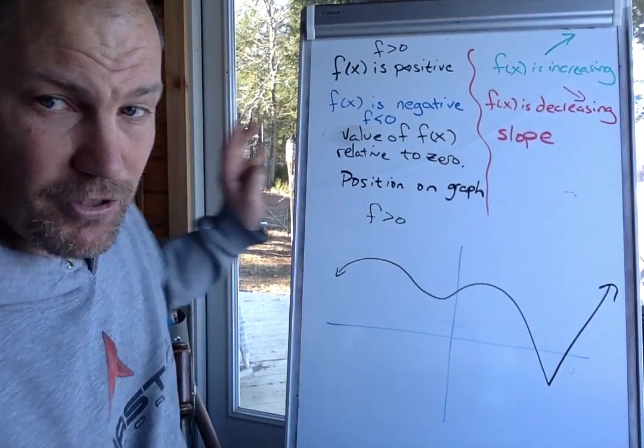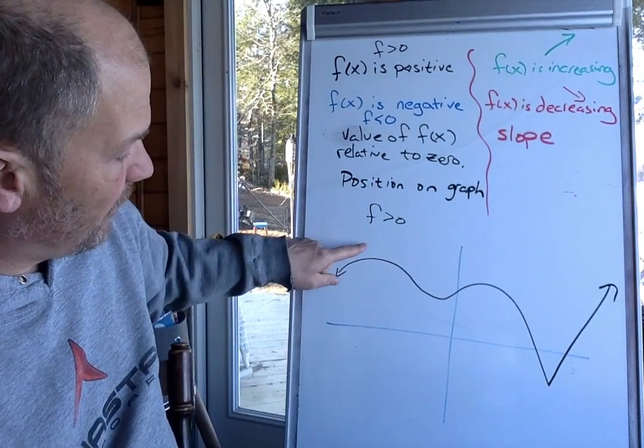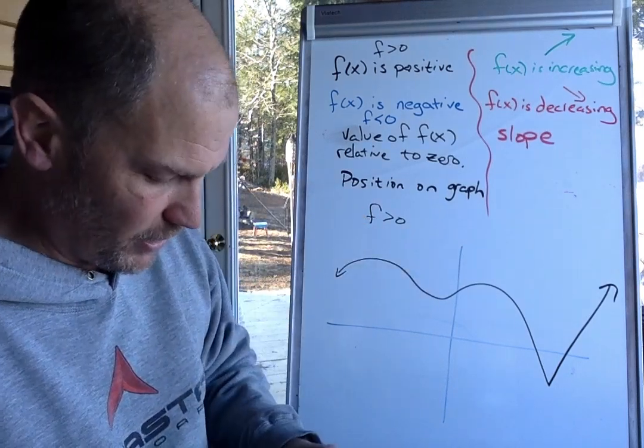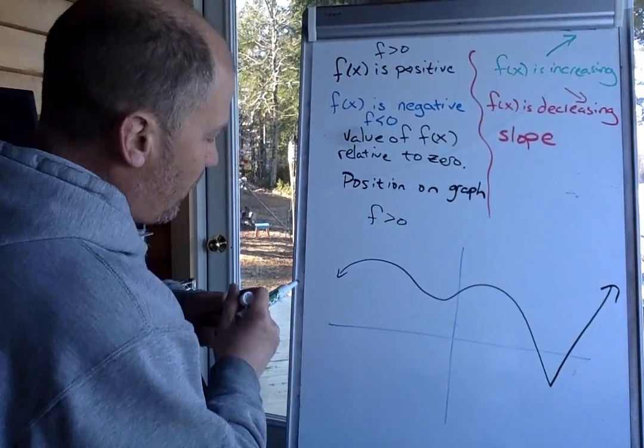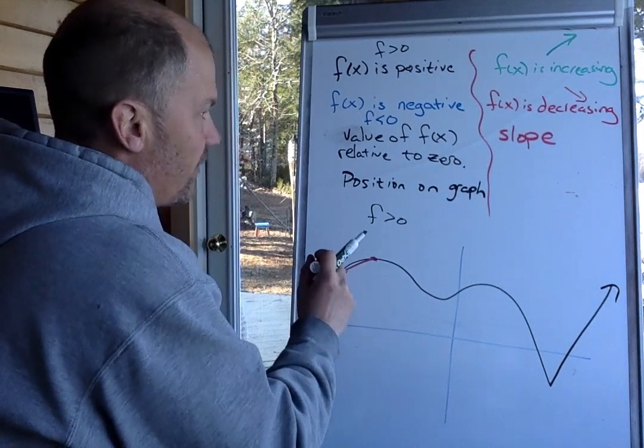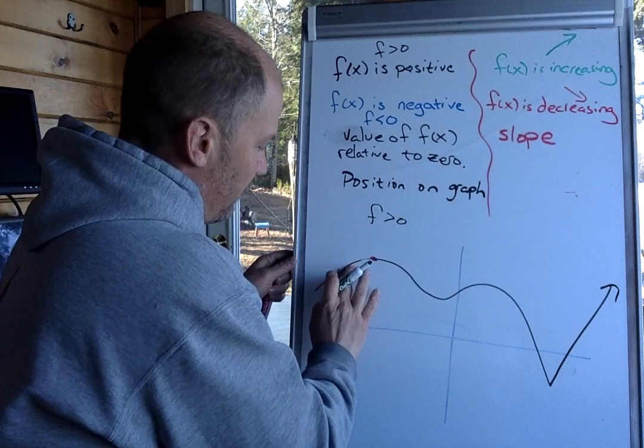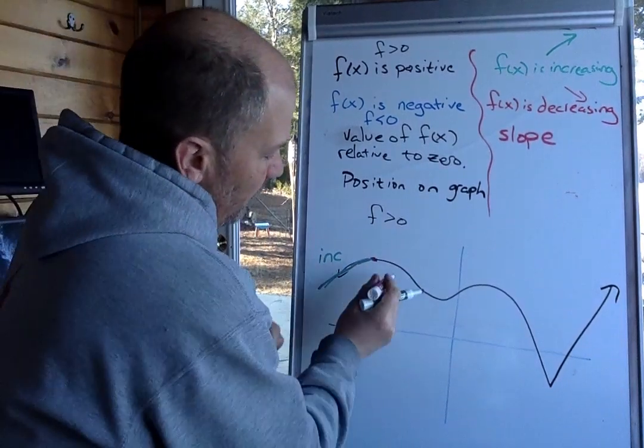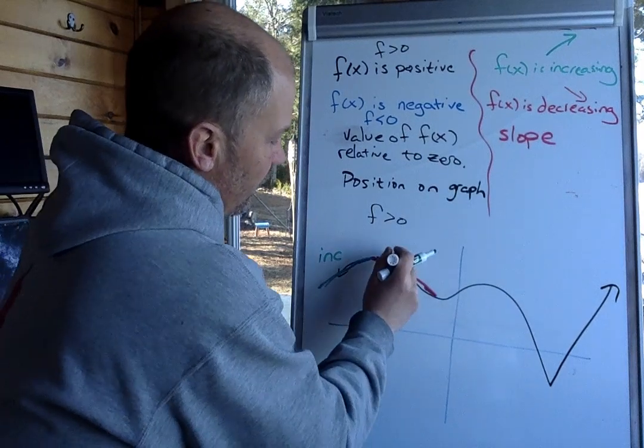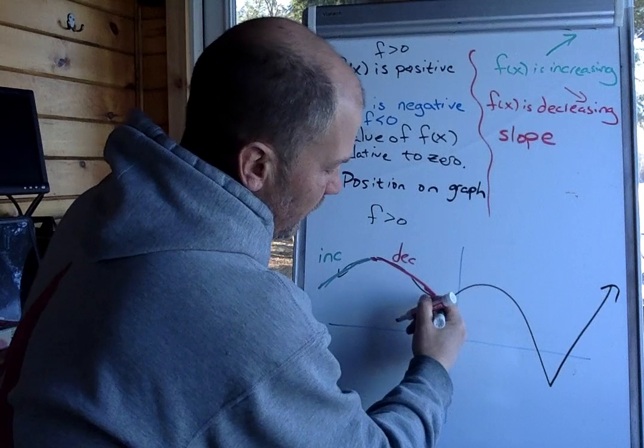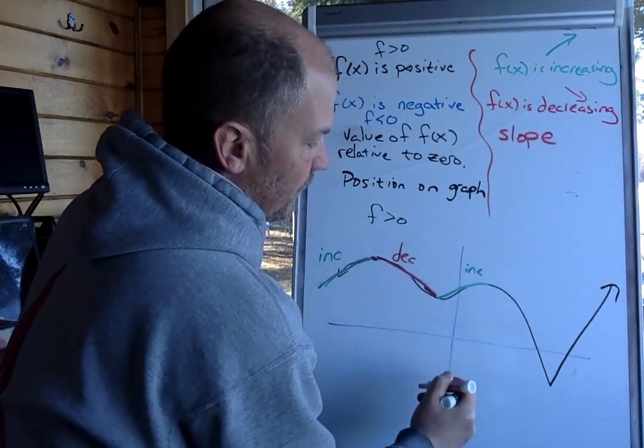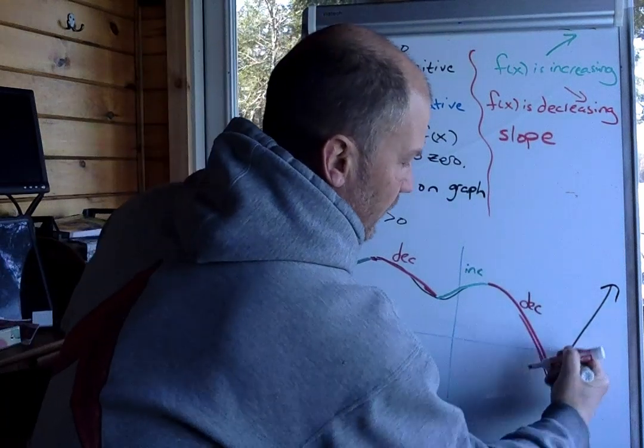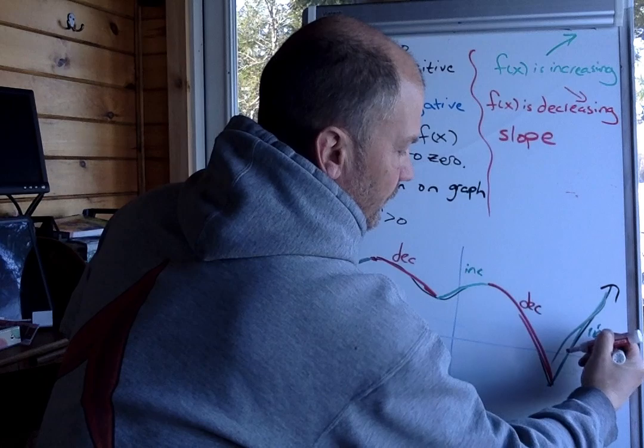If we read this function from left to right, it has an increasing slope here. The function is decreasing here. So I'm gonna color code this for us. From out here to here, the function is increasing. From here to about there, the function is decreasing because the slope is negative. From here to here, the function is increasing again. From here down to here, the function is decreasing. And then from here to here is increasing again.